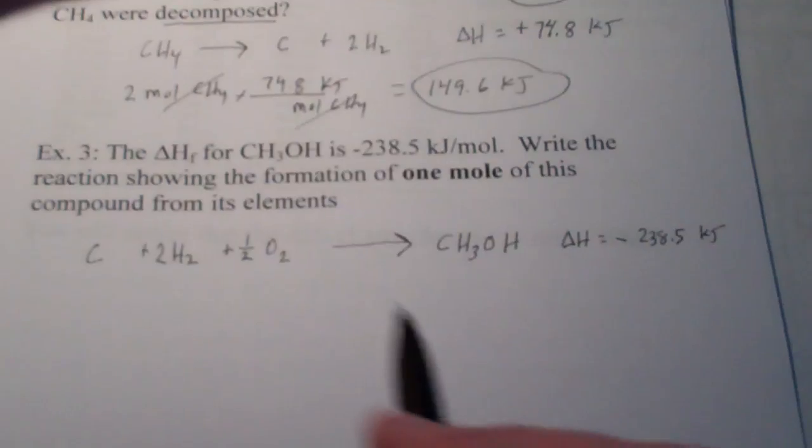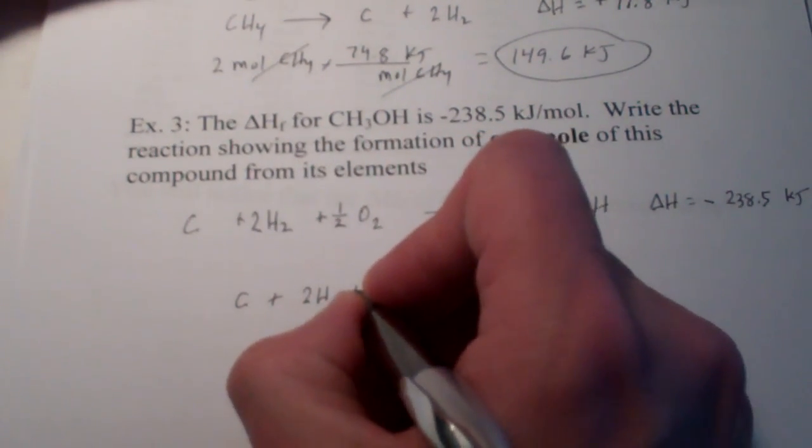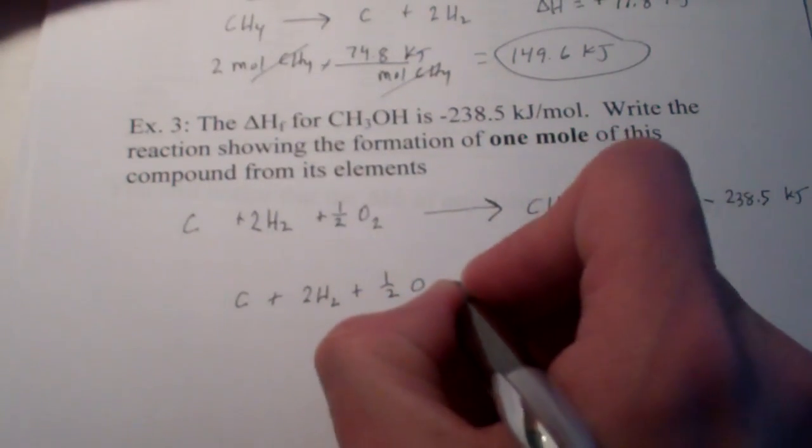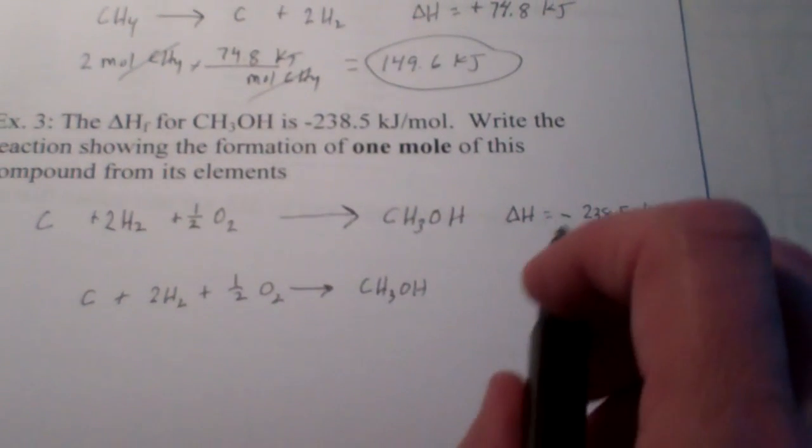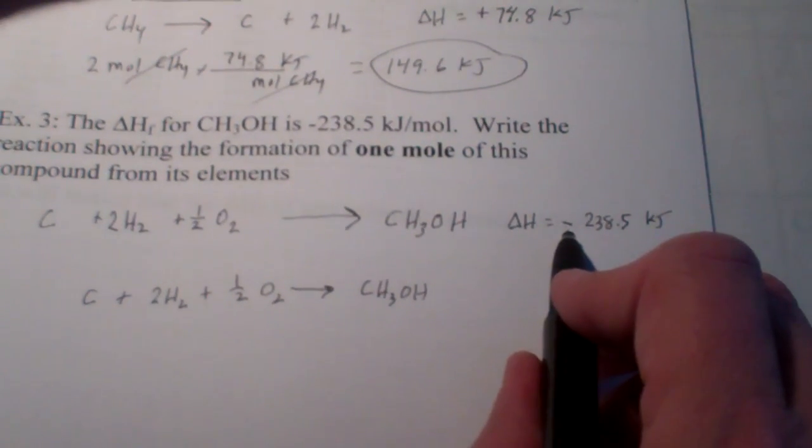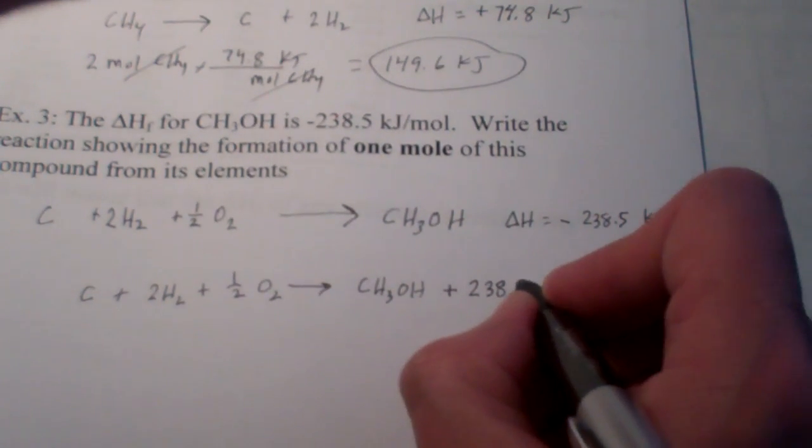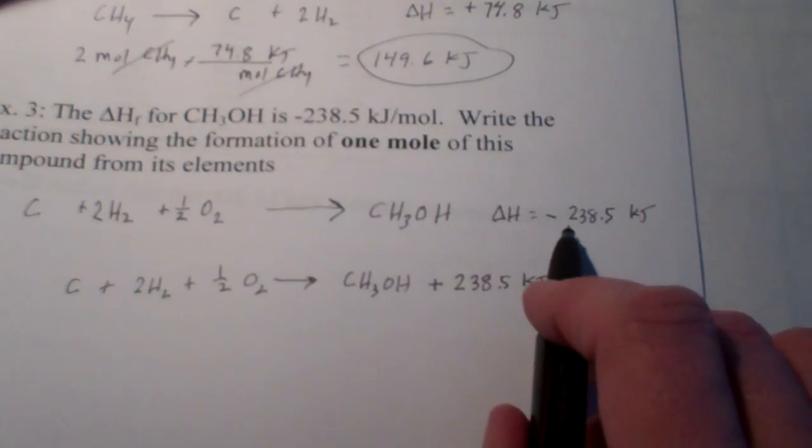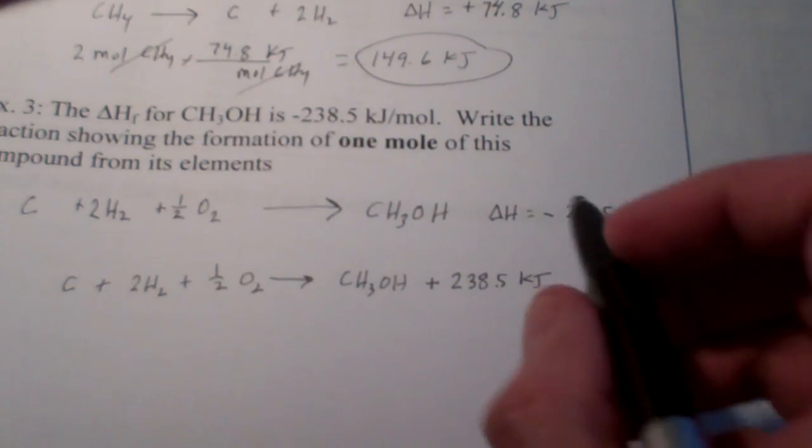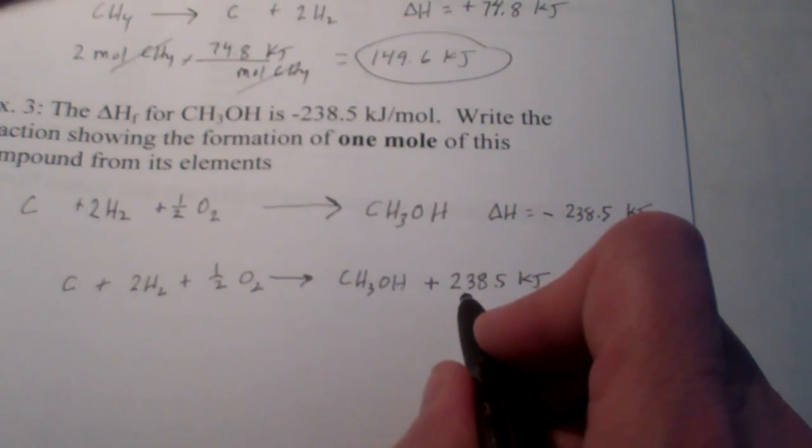Now, another way to write this is as such. We can have C and 2H2 plus one-half O2 reacts to form CH3OH. Now, since I'm giving off heat, see that sign is negative, I can put plus 238.5 kilojoules of heat. That's another way to write this reaction. Whenever a reaction is exothermic, you can write the heat given off as a product.